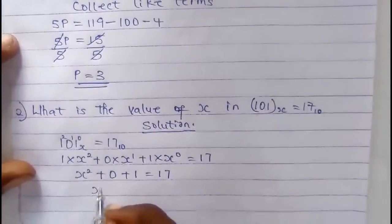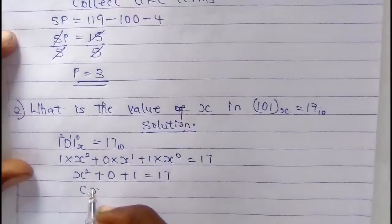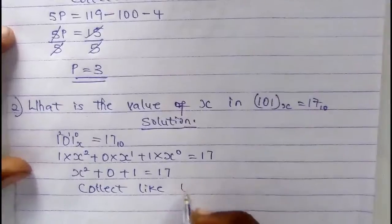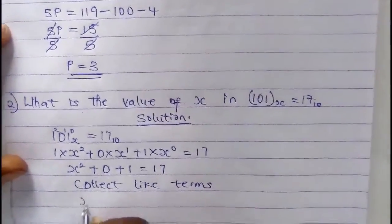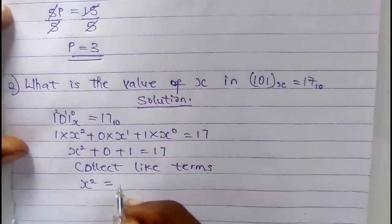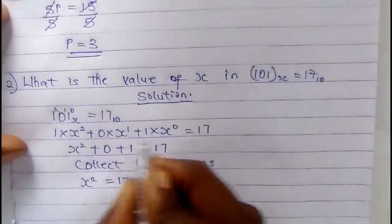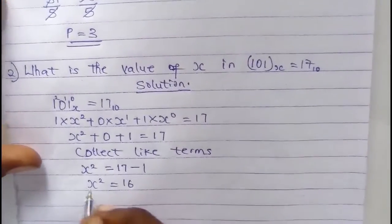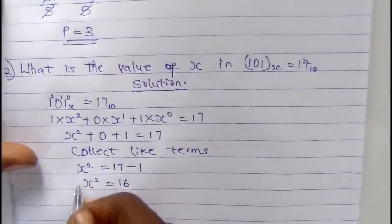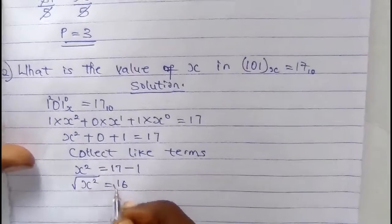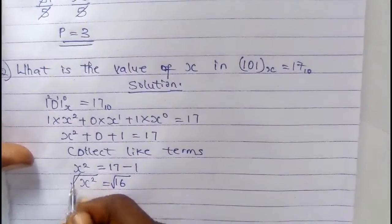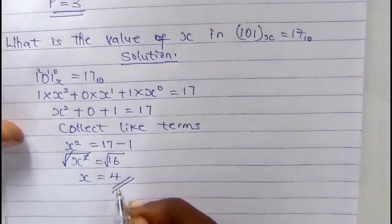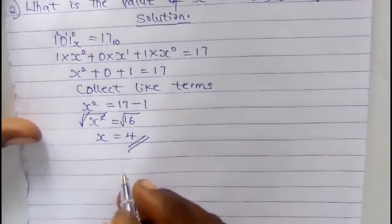So we have: S squared plus 1 equals 17. Collecting like terms: S squared equals 17 minus 1, so S squared equals 16. We are not looking for S squared — we are looking for S. Taking the square root of both sides, the square root cancels the square, so S equals 4. That is our answer.